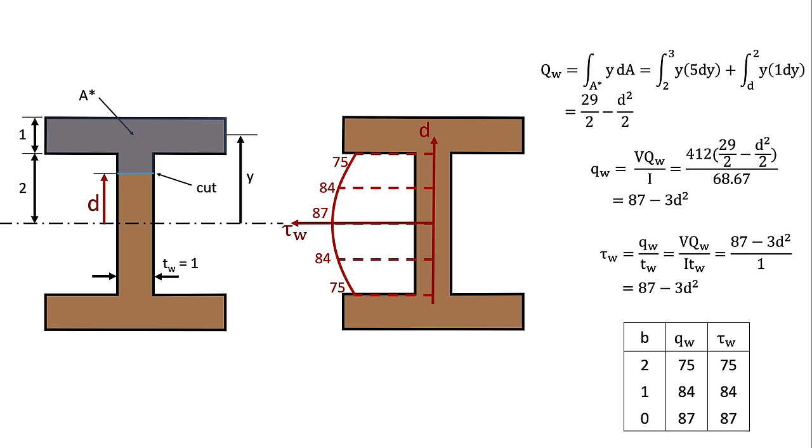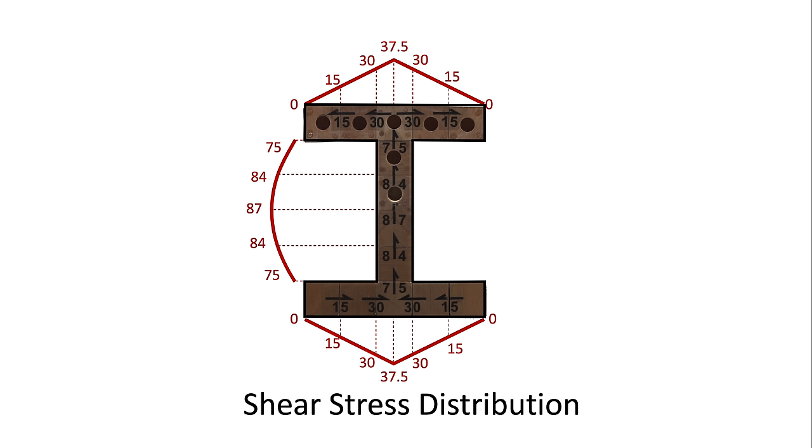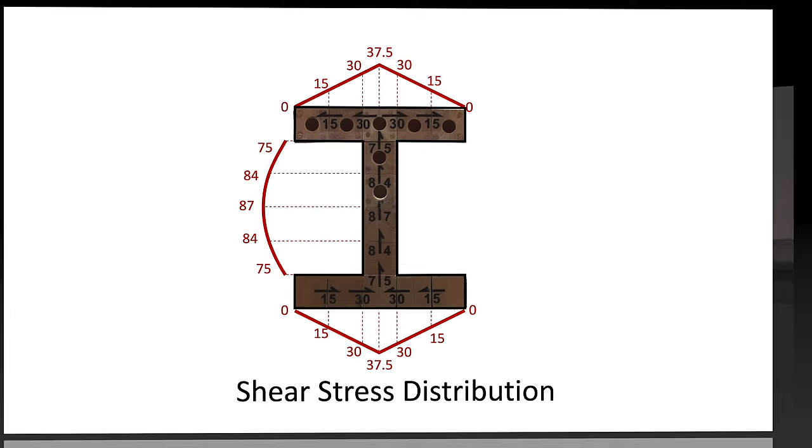As these calculations show, the shear stress in the web takes a parabolic form. Plotting all of these graphs on a single figure reveals what is called the shear stress distribution for that cross-section.